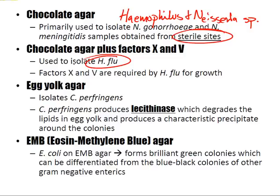Egg yolk agar isolates Clostridium perfringens, which produces lecithinase that degrades lipids in egg yolk, producing a characteristic precipitate around colonies. EMB (eosin-methylene blue) agar is used for E. coli, which forms brilliant green colonies distinguishable from the blue-black colonies of other gram-negative enterics. It also inhibits gram-positives and differentiates between lactose fermenters and non-lactose fermenters.